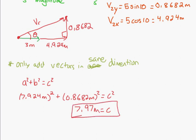Okay, so this is the resultant vector, so I can write that up there, 7.97 meters. And then you need to get the angle.